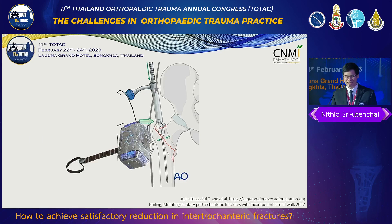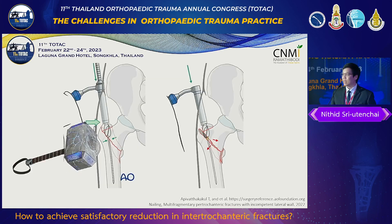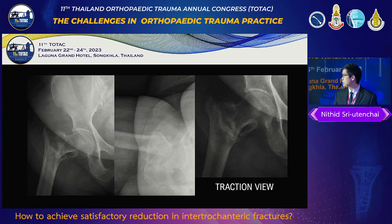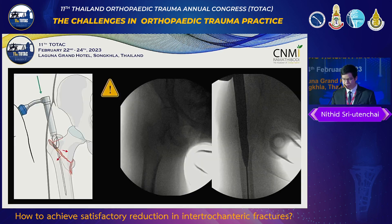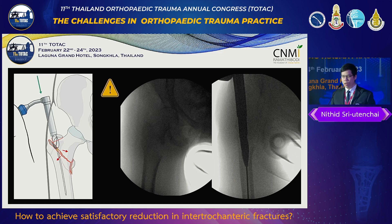Coming back to the hammer — the key is not just to reduce, but to prevent further displacement during proximal reaming. For example, in a pertrochanteric fracture, when you perform proximal reaming without the hammer, the reamer will unintentionally track to the lateral side because the medial bone is harder than the lateral bone.